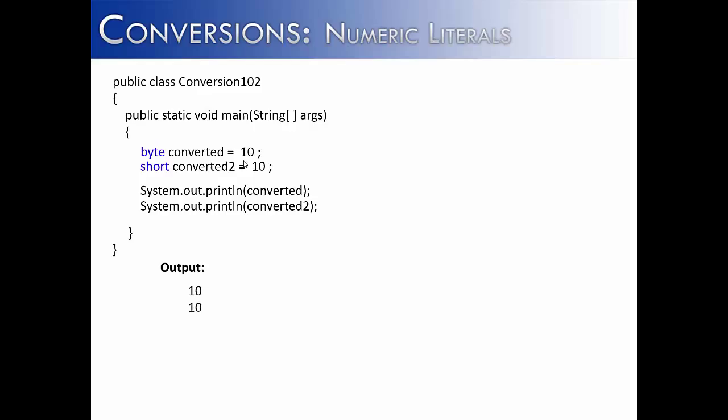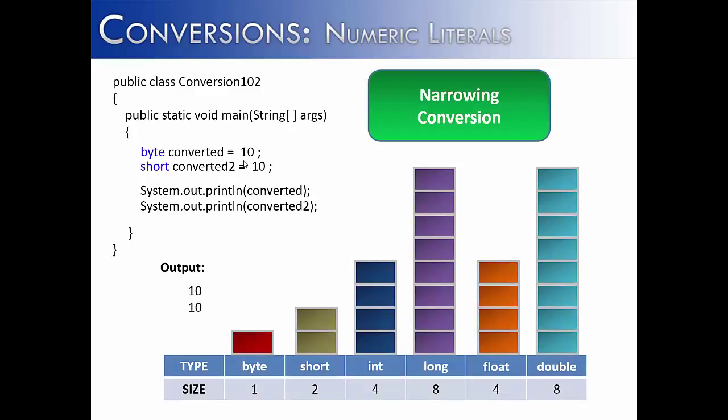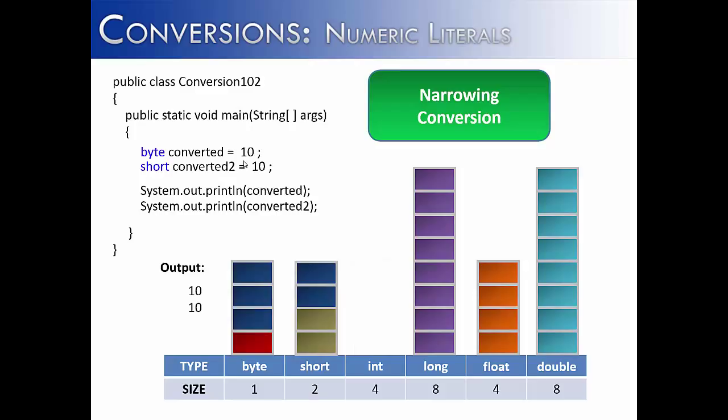The rule is, any time you're making a narrowing conversion, that is, taking a larger data type and moving it into a smaller data type, you normally are required to put a cast in front of it. But this is just not necessary when you're dealing with literals. Although 10 and 10 represent integer literals, no cast is required in order to make them into a byte or a short.